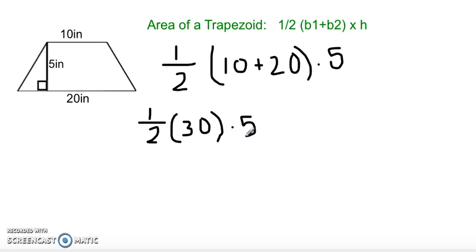All right, so now, we have one half times 30, and we know that when you're multiplying by a half, it's just half of what the number is. So, one half times 30 is 15.